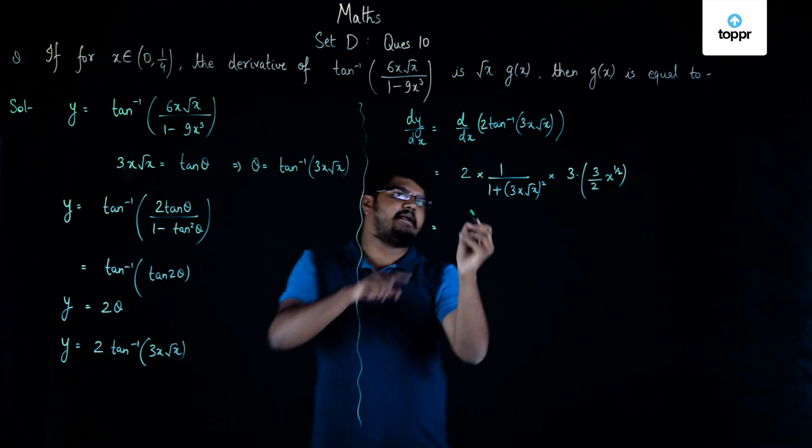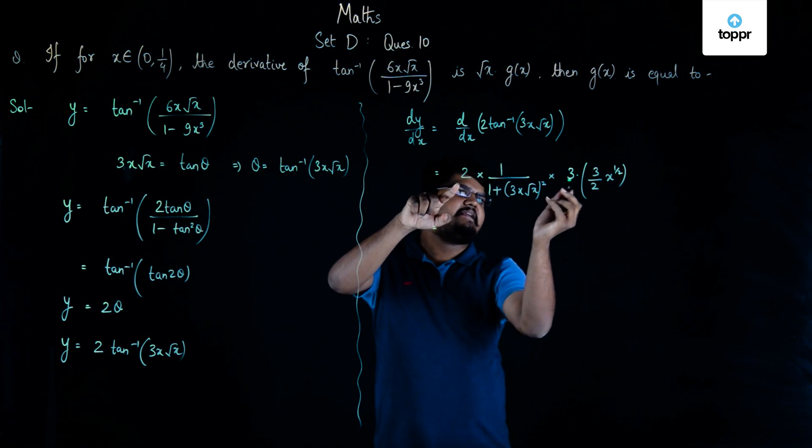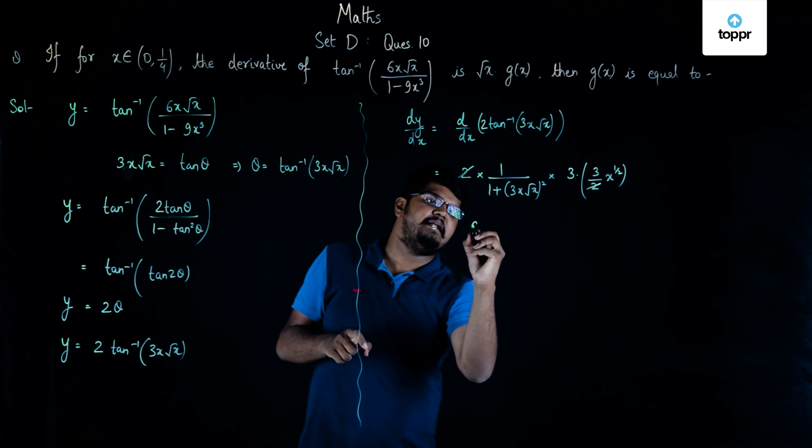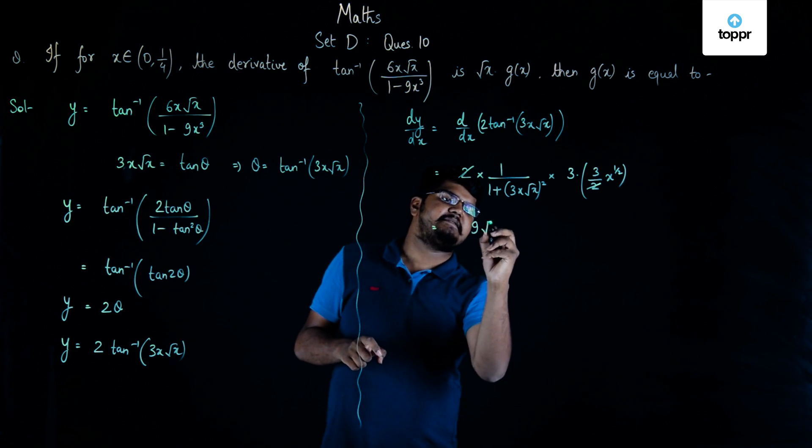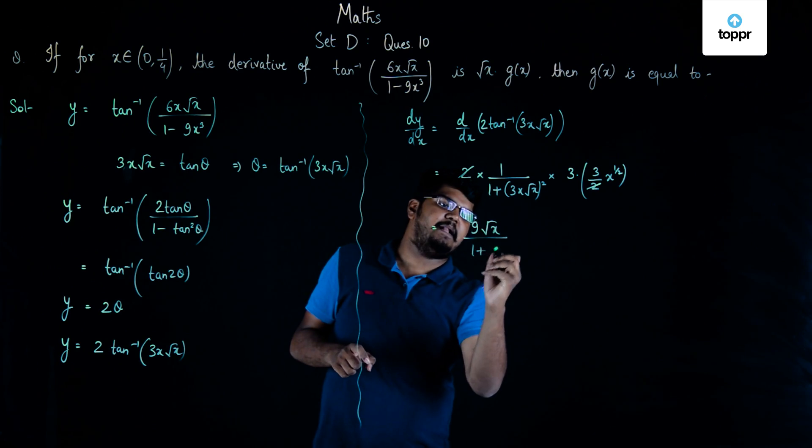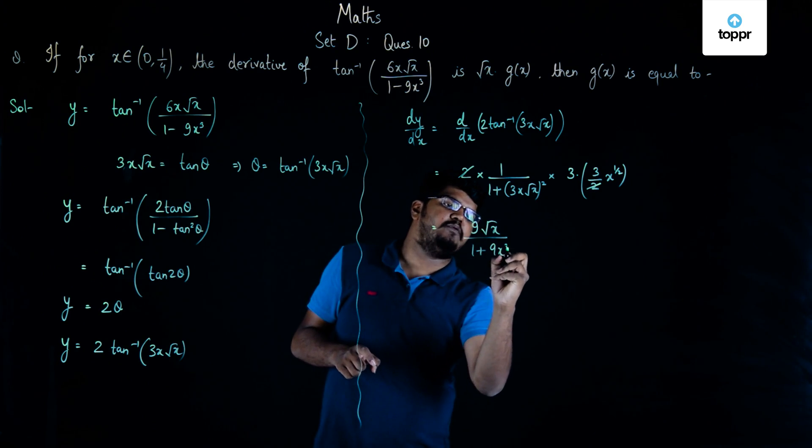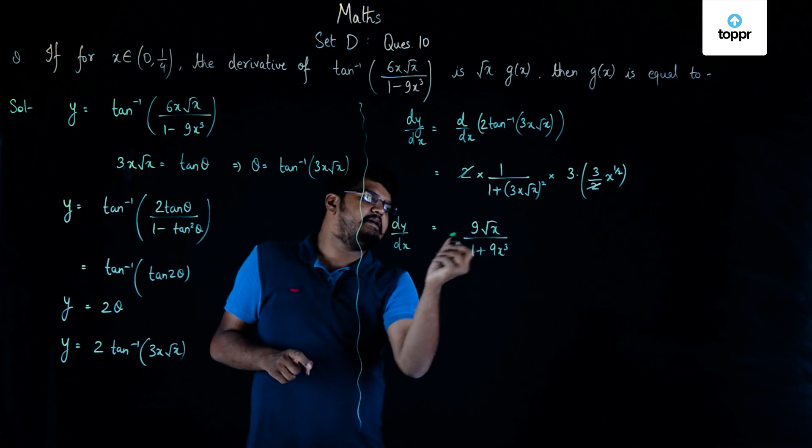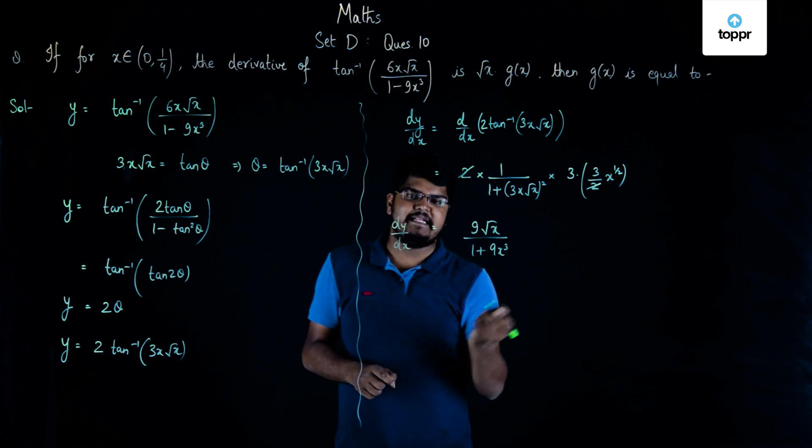Now if we simplify this: 2 into 3 is 6, 6 into 3 is 18. The 2s will cancel. So we will have 9√x/(1 + 9x³). So you can see that we have dy/dx as 9√x/(1 + 9x³).